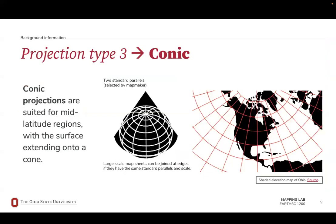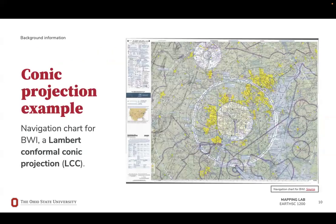Our third type of projection is the conic projection. With a similar approach to the cylindrical projection, we take a conical sheet of paper and place it on the globe and then unroll it. These are good at representing places like North America when the cone is placed on the North Pole, but we can also orient the cone in any direction. If we orient the cone about some landmark, for example BWI airport, we can correctly represent radial distance from the airport on a map. This is a navigation chart for pilots, showing a Lambert conformal conic projection, or LCC.